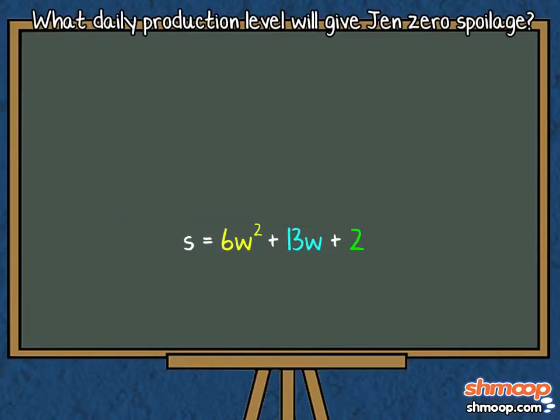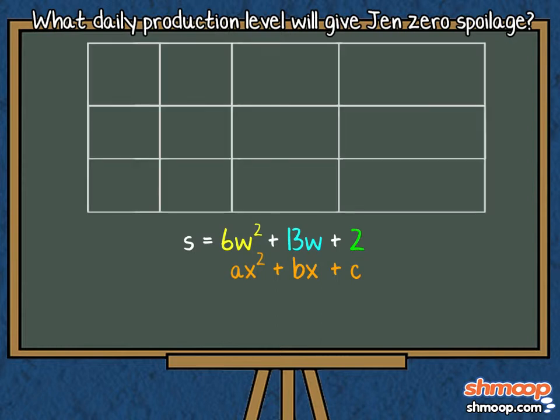This looks like a trinomial equation of the type AX squared plus BX plus C. Here we're using W's instead of X's. To find the answer, we're going to need to factor out the A and the C in the equation. We'll do this by using a table. Our table has four columns.